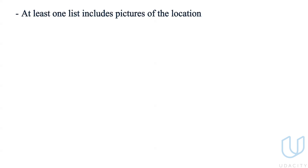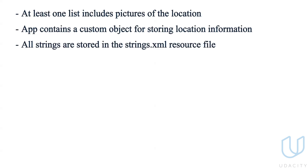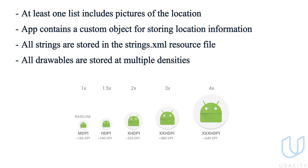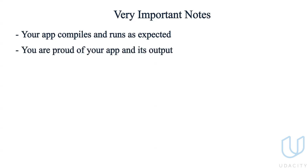At least one list should include pictures of the location. The application must contain a custom object for storing location information. All strings are stored in the strings.xml resource file, and all drawables are stored at multiple densities.